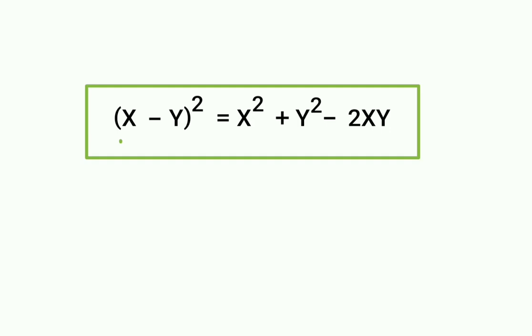Hello dear students, Beta, aaj ham algebraic identity x minus y whole square ke baare mein sikhhenge. That is equal to x square plus y square minus 2xy.